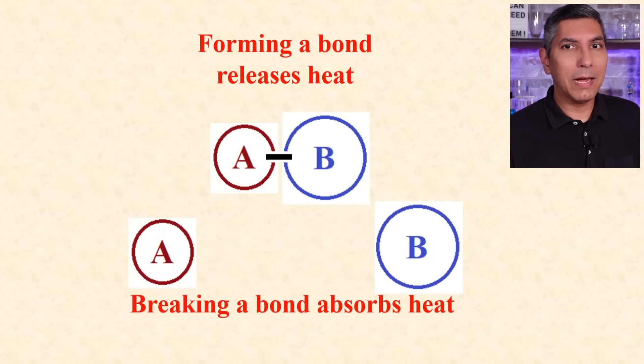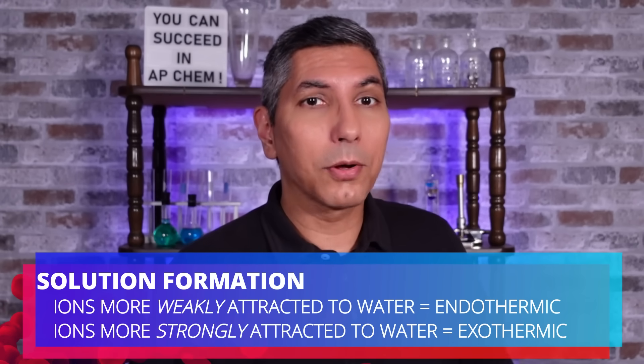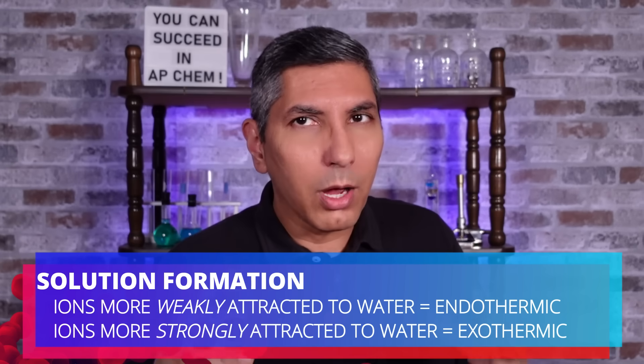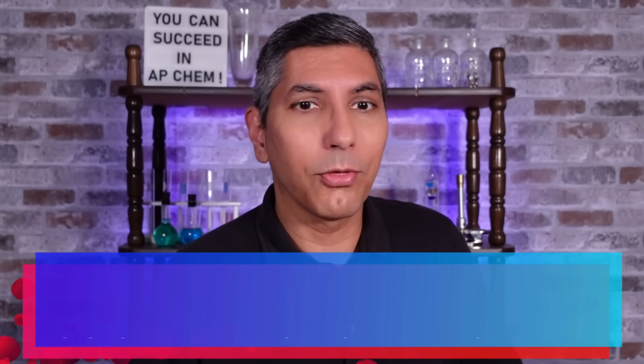When some ionic compounds dissolve, they break a very high energy bond and form a somewhat weaker attraction to water molecules. That would be a net endothermic process. On the other hand, other compounds might break a relatively weak bond and then form a stronger attraction to water molecules. That would be a net exothermic process.